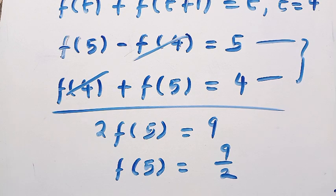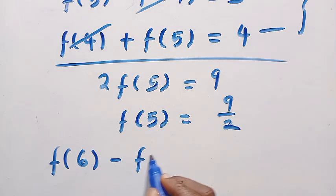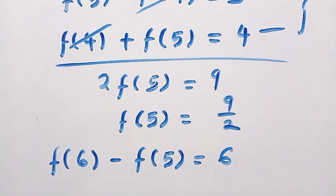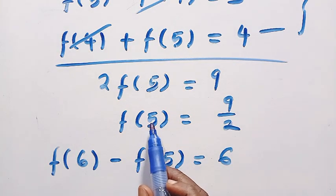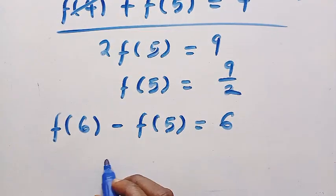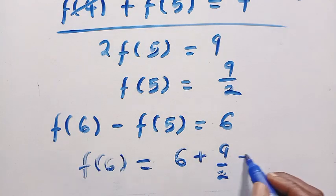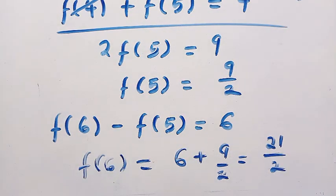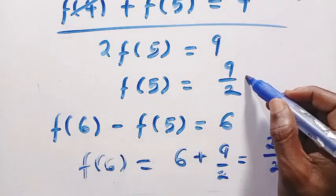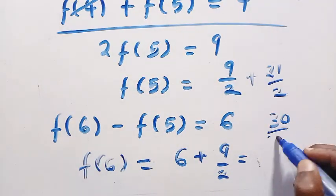We don't need f(4) separately. In the first rearranged equation, let t equal 6: f(6) − f(5) = 6. Since f(5) = 9/2, we get f(6) = 6 + 9/2 = 21/2. Adding f(5) and f(6) together: 9/2 + 21/2 = 30/2 = 15.